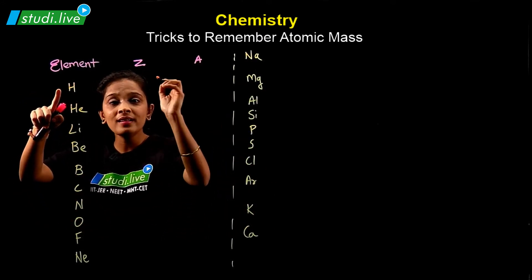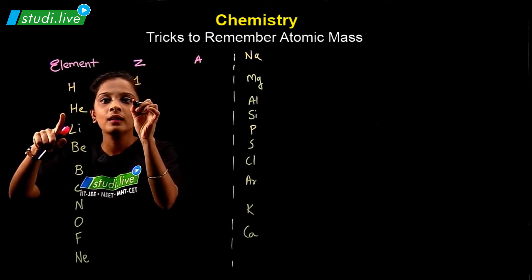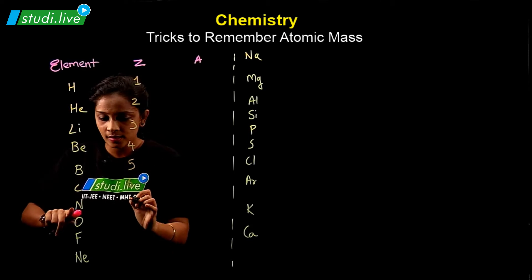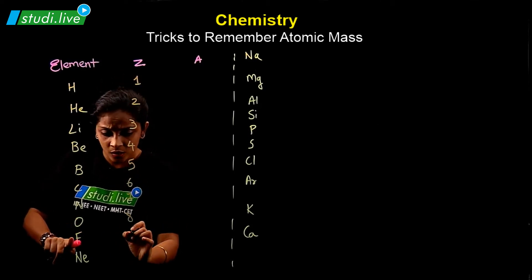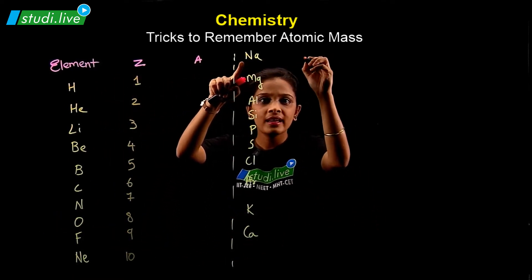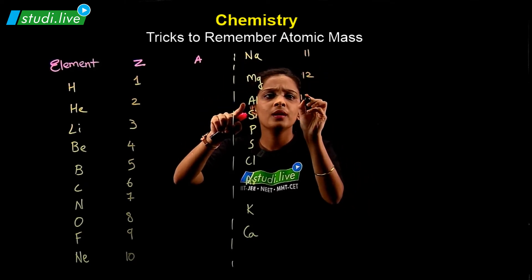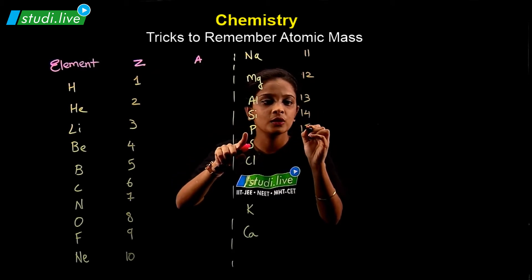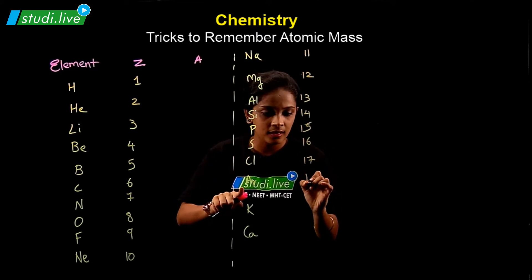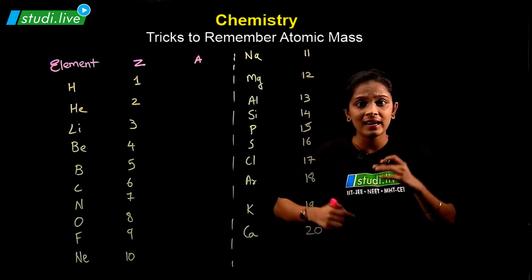So we have hydrogen starting from it. Z is one. Just write the Z value over here first for all the elements. So we have hydrogen 1, helium 2, lithium 3, beryllium 4, boron 5, carbon 6, nitrogen 7, oxygen 8, fluorine 9, neon 10. Then starts from sodium. Sodium we have 11. This is the Z value I'm writing. Magnesium 12, aluminum 13, silicon 14, phosphorus 15, sulfur 16, chlorine 17, argon 18, potassium 19, and calcium 20. I'm including 20 only right now.